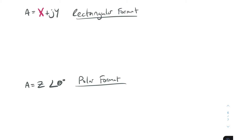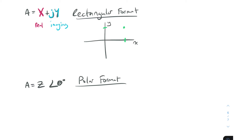In rectangular format, x is the real component of the complex number, and the jy part is the imaginary part. Don't worry too much about what those terms mean. On a standard x-y axis graph, a number that only exists along the x-axis is purely real. A number that only exists along the y-axis is purely imaginary — its x is zero. A number somewhere in between has both a real part and an imaginary part. That's all those terms mean.